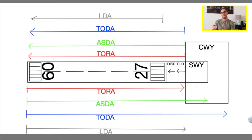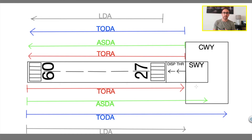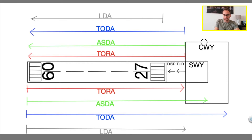Over the clearway, the aircraft should not be touching the ground, but actually flying over it. This is the synonym CWY, as you can see in there.